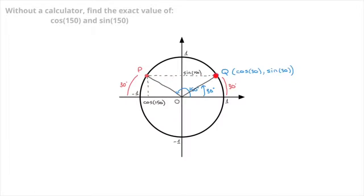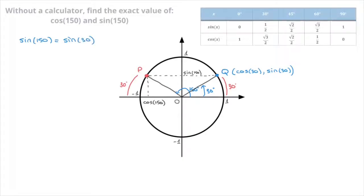We now compare the coordinates of points P and Q. Looking at these, we can see right away that they both have the same vertical coordinate. And since the vertical coordinate of P is sine of 150, and the vertical coordinate of Q is sine of 30, that immediately allows us to state that sine of 150 equals to sine of 30. And sine of 30 has a well-known value — it's equal to 1 over 2.